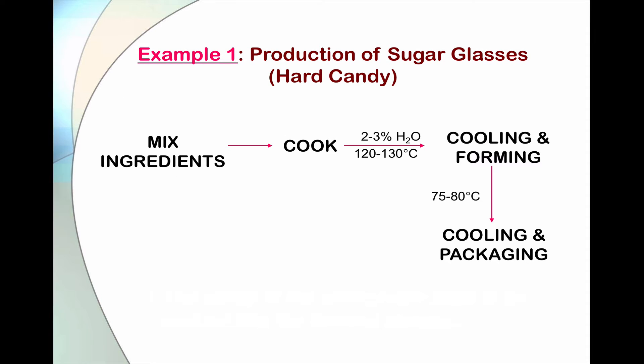So let's look at the process of hard candy production. Typically, hard candies are made with sucrose and corn syrup as the main ingredients, with of course the addition of colors and flavors, and sometimes maybe acid to provide some tartness or sourness. So in the process of manufacturing of hard candies, as shown in the flow chart here, first the raw materials are mixed and then cooked or heated to ensure that all sugar crystals in the mixture are dissolved completely.